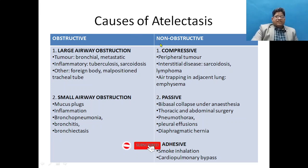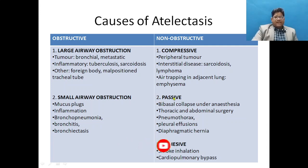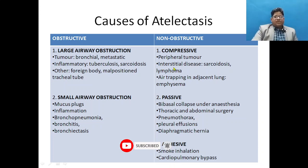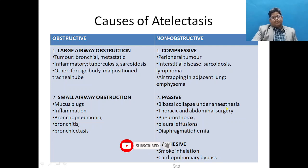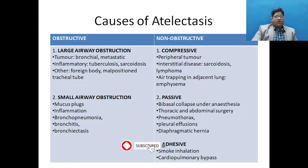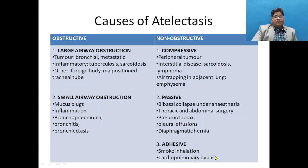Small airway obstruction can be due to mucus plugging, bronchopneumonia, bronchitis, or bronchiectasis. Non-obstructive causes include compressive collapse from peripheral tumor, interstitial diseases like sarcoidosis or lymphoma, or air trapping in adjacent lung. Passive collapse occurs under anesthesia in postoperative thoracic or abdominal surgery, or due to pneumothorax or pleural effusion. Adhesive collapse is seen in smoke inhalation and cardiopulmonary bypass.